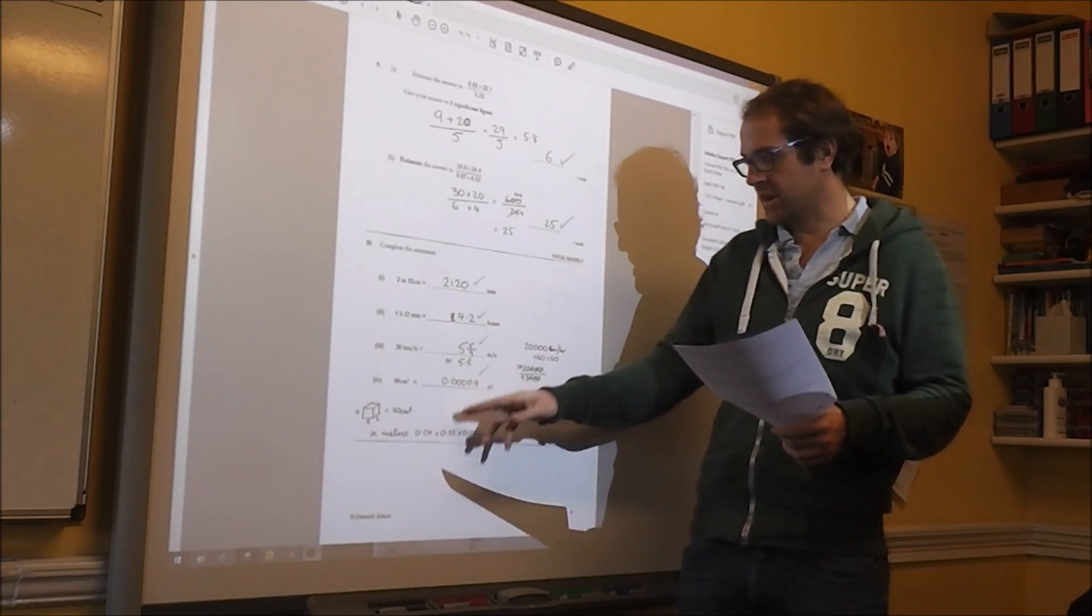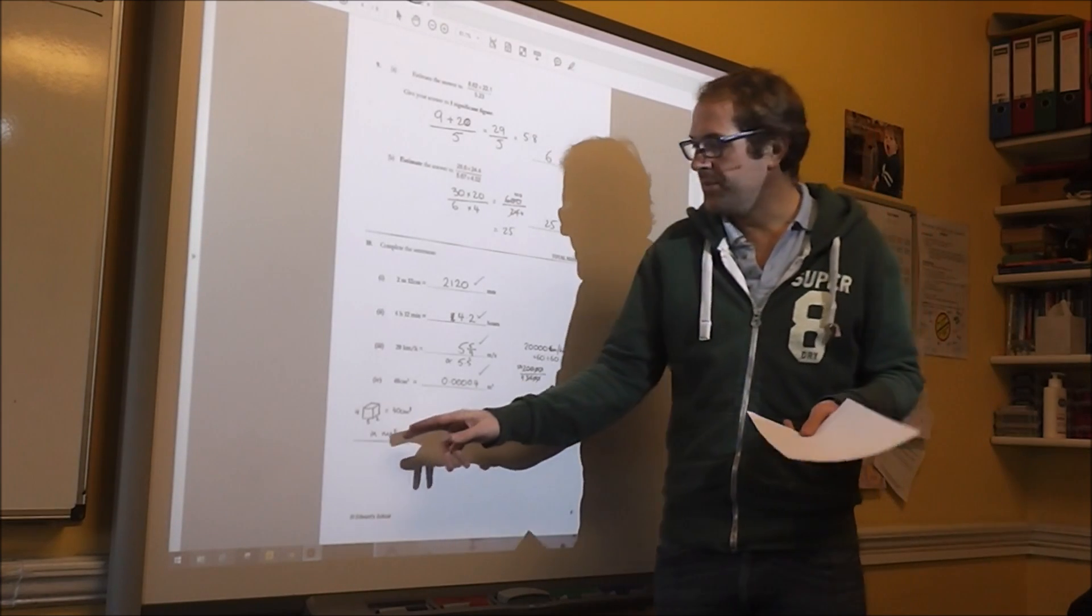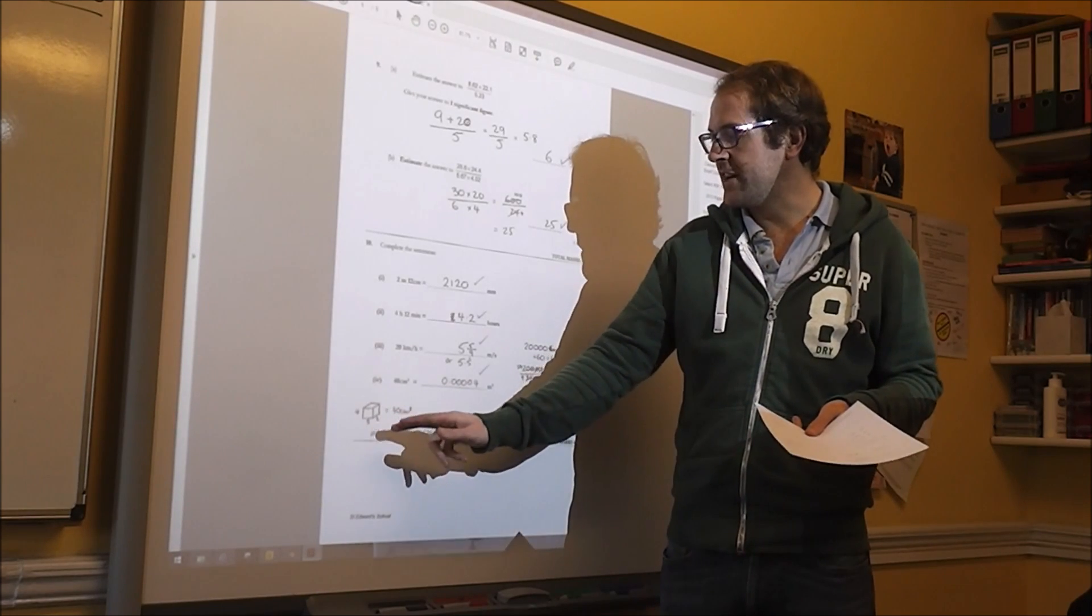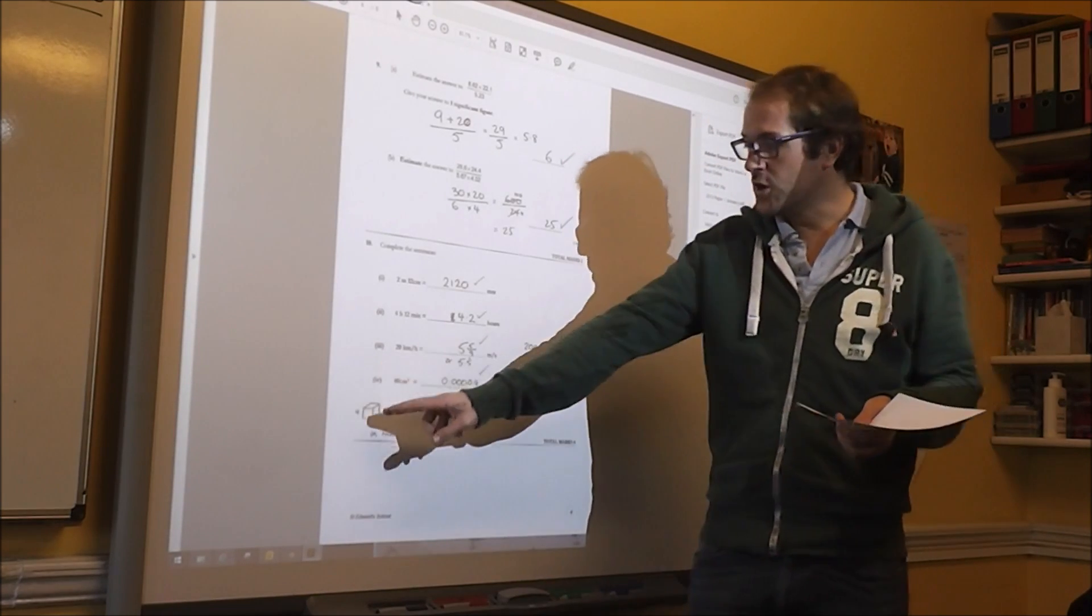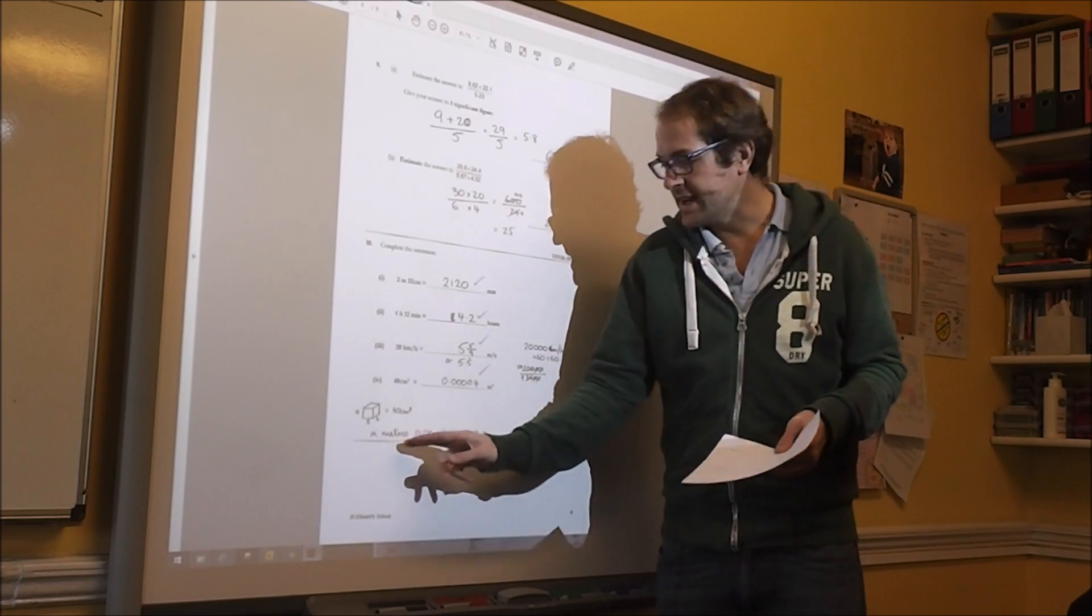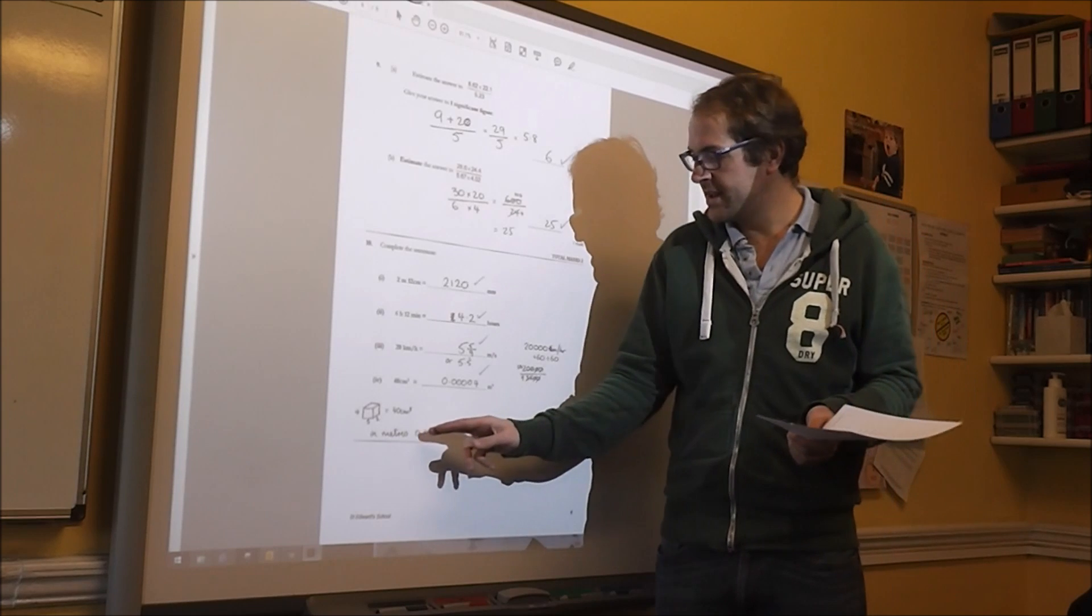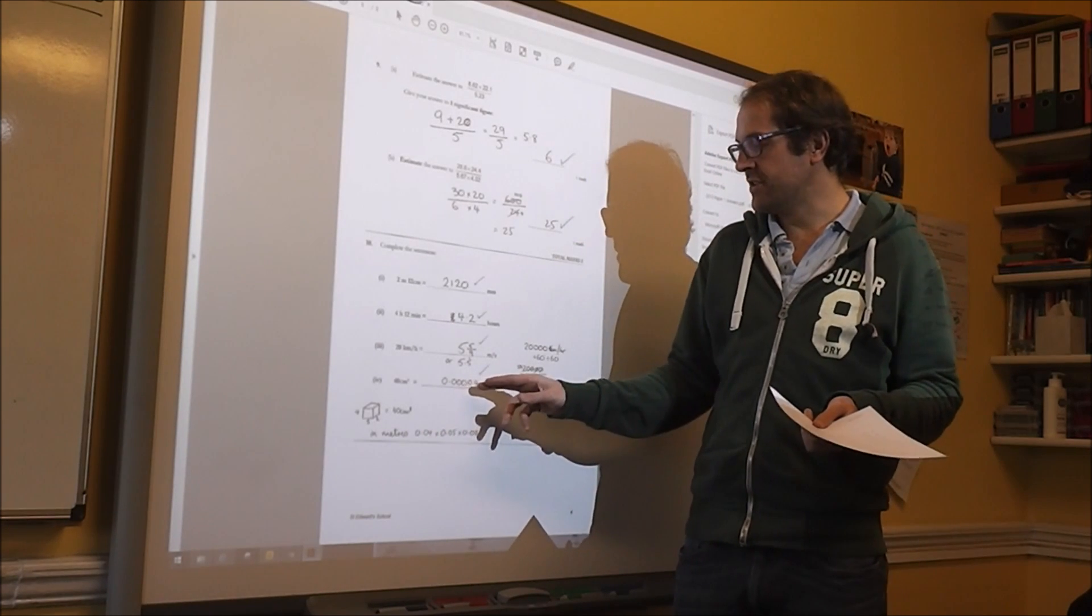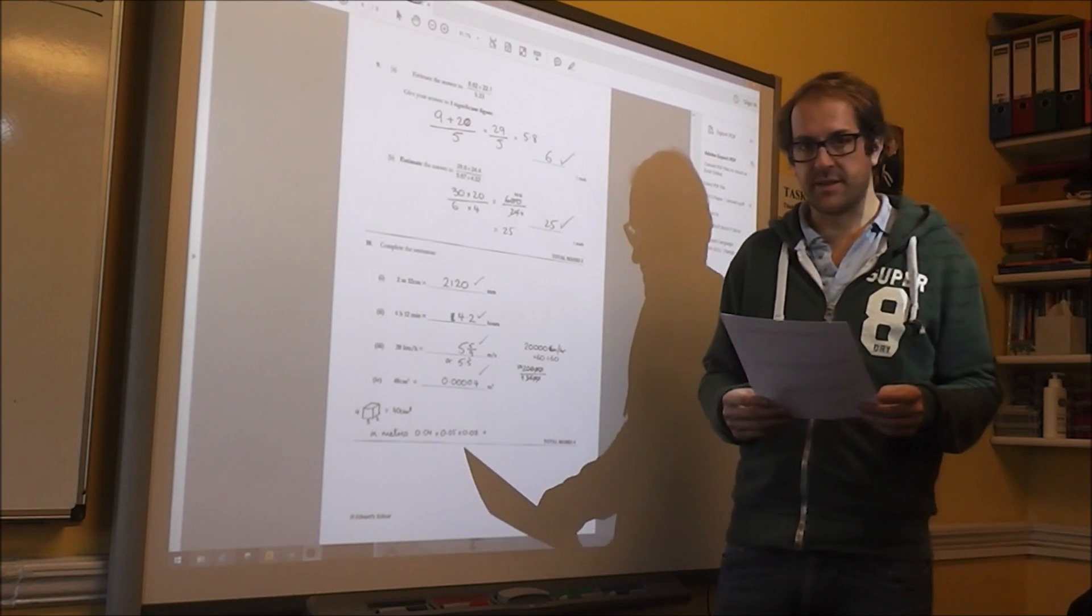Well, this one's quite tricky as well. I imagined that there's a box with dimensions 4 meters by 5 meters by 2, sorry, 4 centimeters by 5 centimeters by 2 centimeters. And then what I did is I converted them into meters, which gave me 0.00004 meters squared.